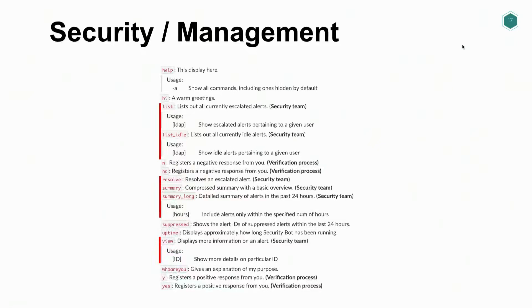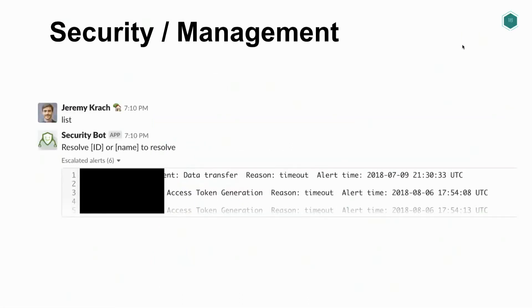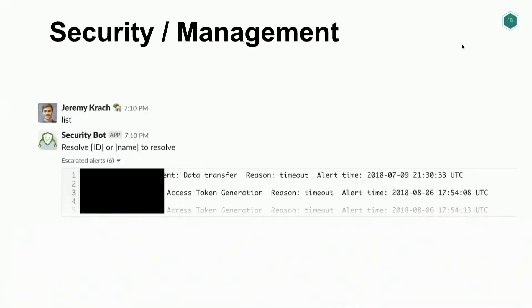The security side is where things get more interesting — we have a lot more commands. The first set is the list commands. The list command shows all escalated alerts in the system, giving information about timestamp, the associated user, the actual event that happened, the reason it was escalated, and the time it happened. We also support list idle, which shows alerts where an employee was maybe in a meeting and wasn't able to reply right away — a special distinction where we haven't escalated it yet, but we're marking it as a potential risk to surface separately.